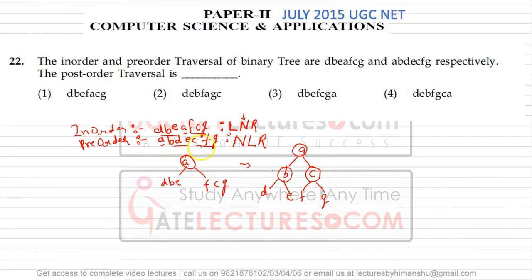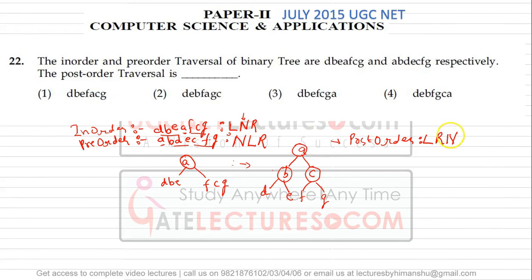According to pre-order, first we have the root, then we have the left child, then we have the right child. So you can always construct the tree from these two traversals. Now we need to find out the post-order traversal from this tree. Post-order says: first access the left, then access the right subtree, then access the root. In the left subtree we have a sub-tree rooted at B, so we apply post-order recursively on B.